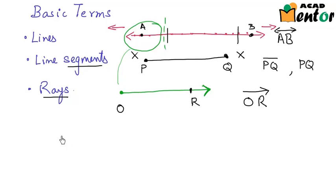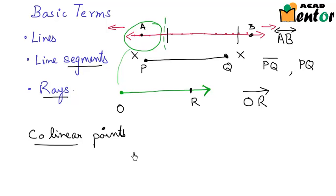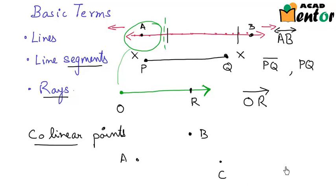How about looking at what collinear points are? If we look at this term collinear, it means something which is on a line. So collinear points would be points which lie on the same line. Let's say I have a cluster of points — let's call this point A, this point B, point C right here, and point D here. Do you think you can draw a line passing through all three points A, B, and C?